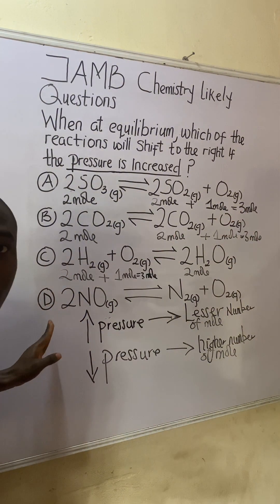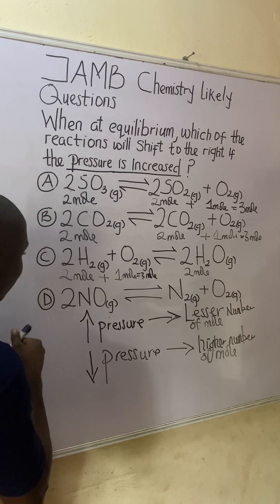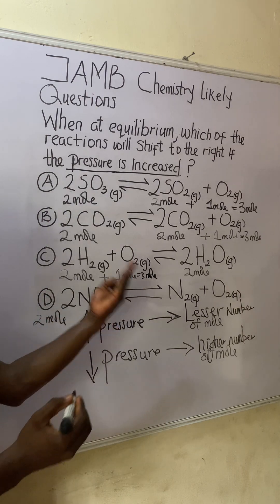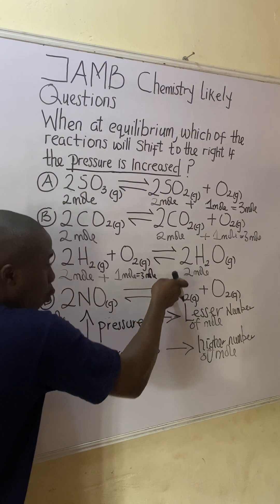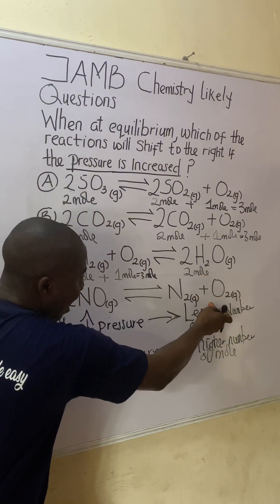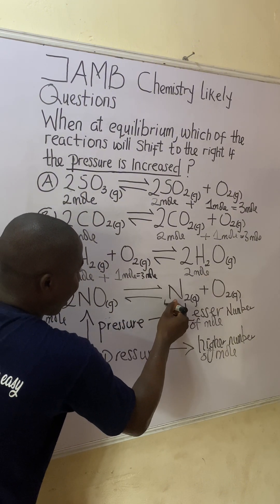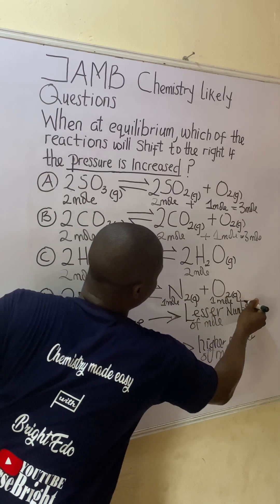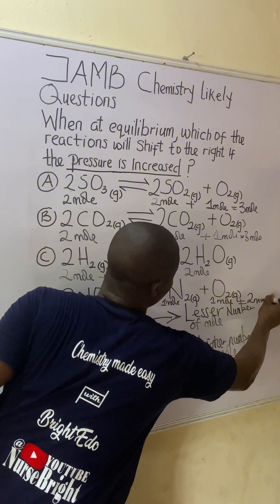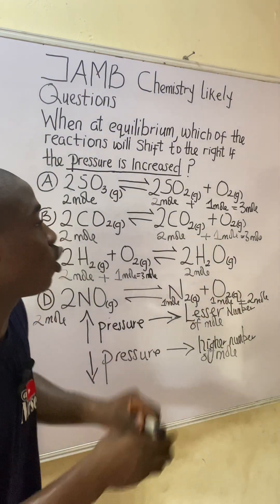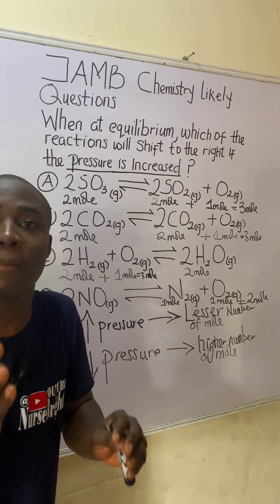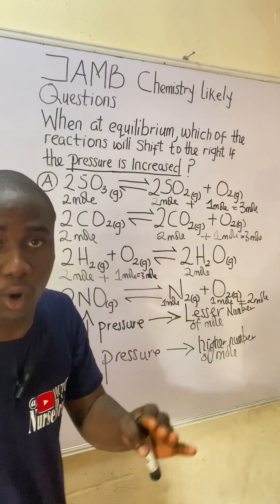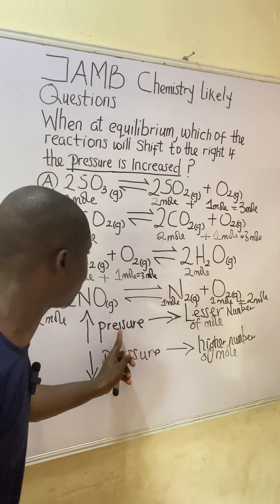For option C, the reactant side has three moles — two moles plus one mole. For option D, the reactant side has two moles, and on the product side we have one mole plus one mole, which also gives two moles. So I've now calculated the number of moles for each side of all the reactions in the options. Let's apply what I said to get the answer.